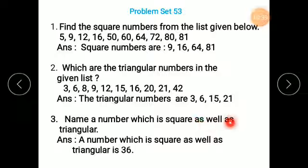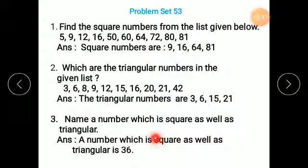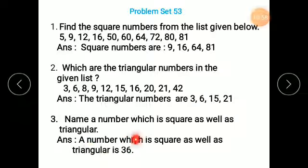Name a number which is square as well as triangular. Only 36 is the number which is both triangular and square up to 100. It is the only such number up to 100; there are some beyond 100, but up to 100, only 36. Always keep it in mind that 36 is the number which is both square and triangular.